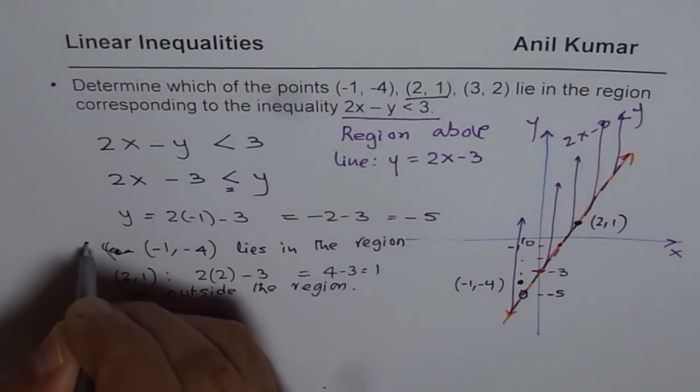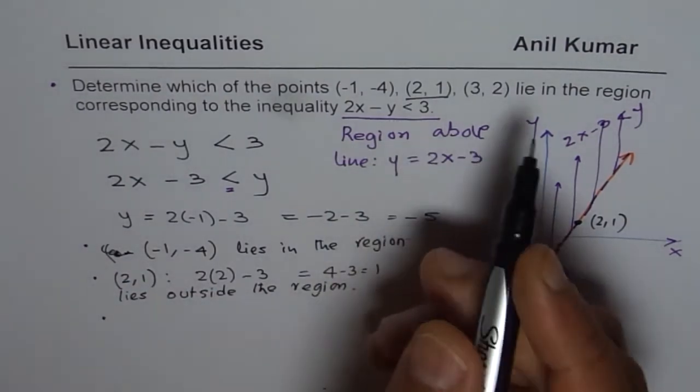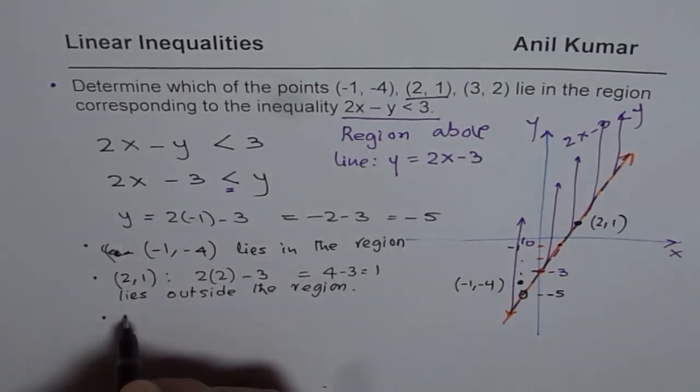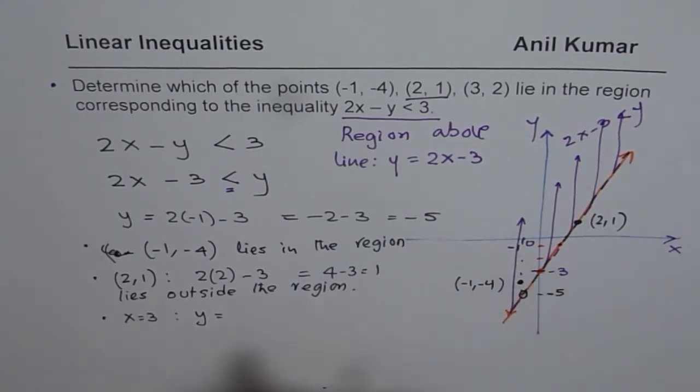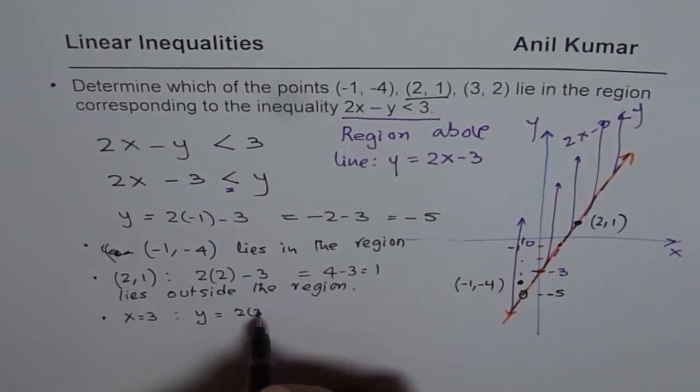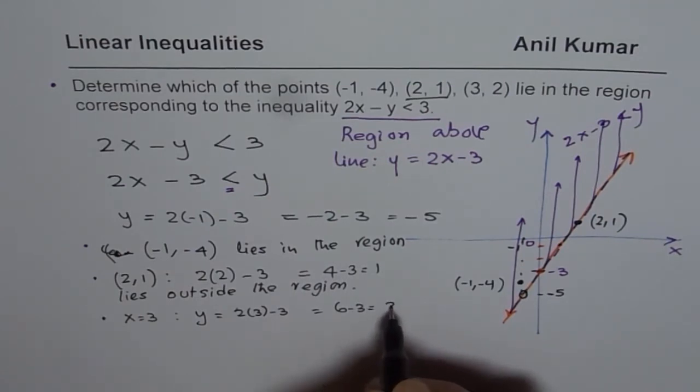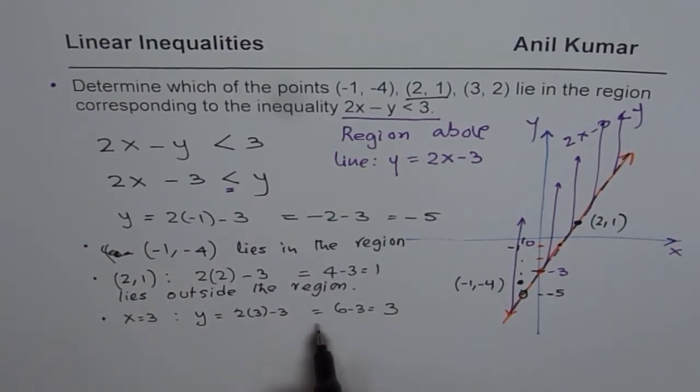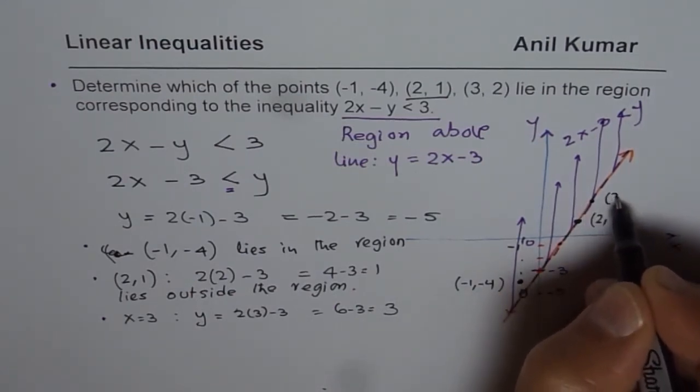We have talked about 2 points. Now, let us consider the third one, which is (3, 2). So substitute 3. If x equals 3, in that case, y on the line will be 2 times 3 minus 3. That is 6 - 3 and that is 3. So at x = 3, the point here is 3.